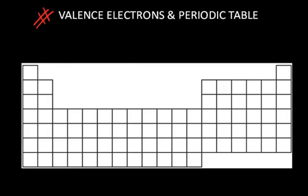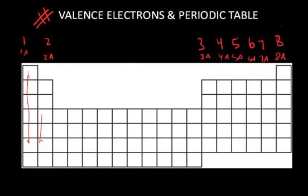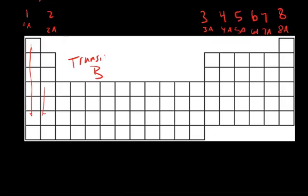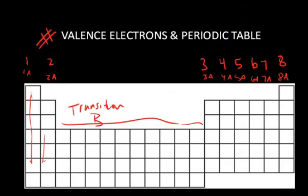Let's think about the representative elements — the A series elements from the periodic table. The number in front of the letter A indicates the number of valence electrons in each group. So group 1A elements all have one valence electron, group 2A they all have two valence electrons, 7A has seven, and 8A has eight. We can predict the type of chemistry those elements will undergo based on the number of valence electrons. The B series — the transition elements — are a little more difficult to predict, so we'll reserve that for a more advanced course.